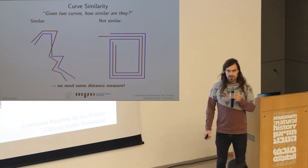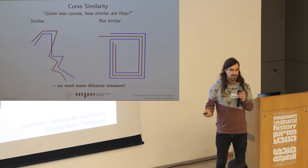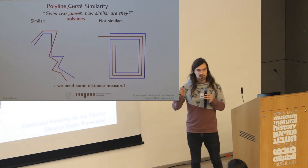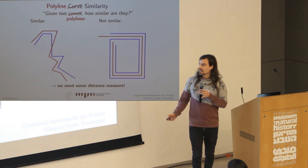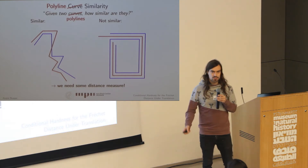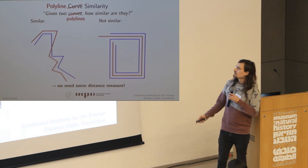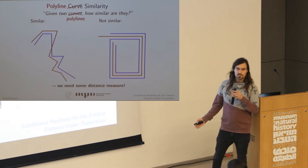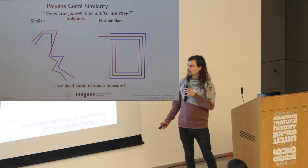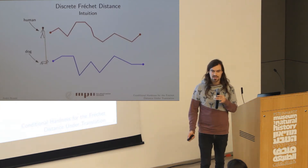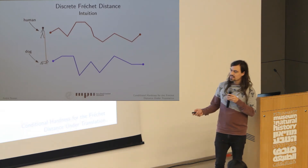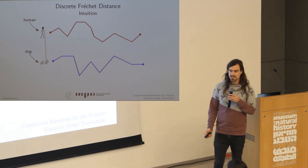This is about curve similarity. Given two curves, you want to know how similar they are. When I talk about curves, I mean polylines — for this talk, I'm restricting to polygonal chains. On the left side here you see two similar curves; those might come from two people walking alongside each other with GPS trackers. On the right side you see two curves which are not that similar — the red curve does one round while the blue curve does two rounds. We need some distance measure to capture this, and that's the Fréchet distance.